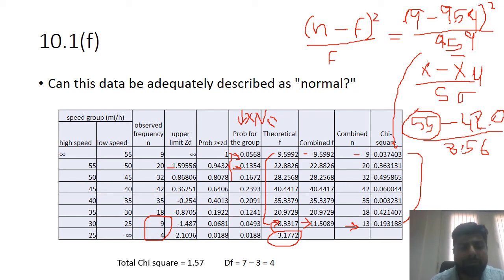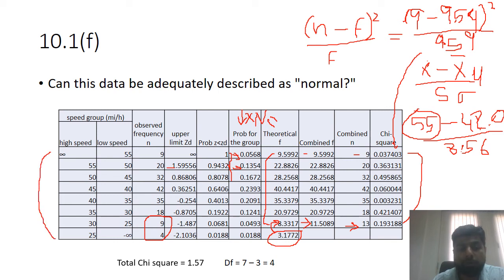The degree of freedom equals the number of remaining groups minus three. We started with eight groups, merged two to get seven, so degrees of freedom = 7 − 3 = 4. You can verify by counting the number of chi-square values summed — there are seven, confirming four degrees of freedom.